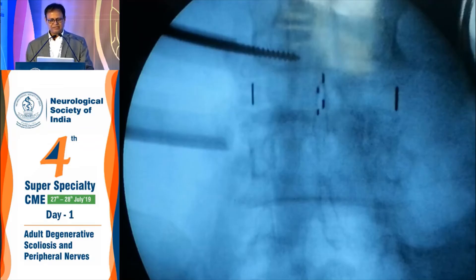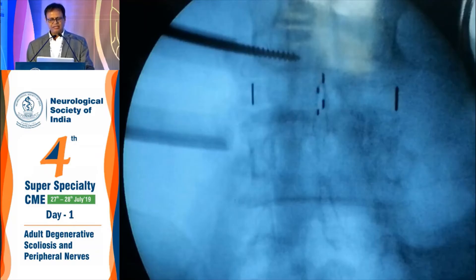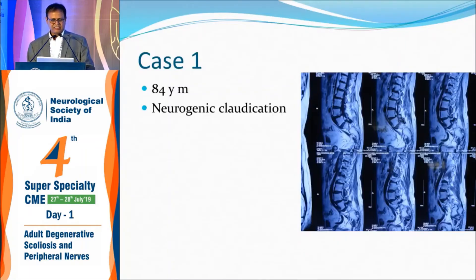Earlier, stand-alone OLIF cages were not FDA approved — one always had to do posterior percutaneous fixation. But now FDA has approved anterior fixation also. I will be showing cases with both anterior fixation and posterior fixation. This first case was an 84-year-old man with neurogenic claudication who had an earlier laminectomy done at age 50. The X-ray showed osteoporosis with degenerative scoliosis.